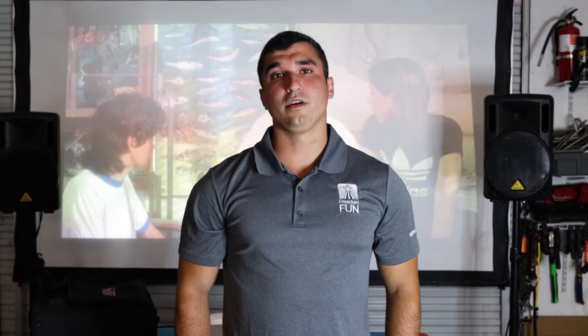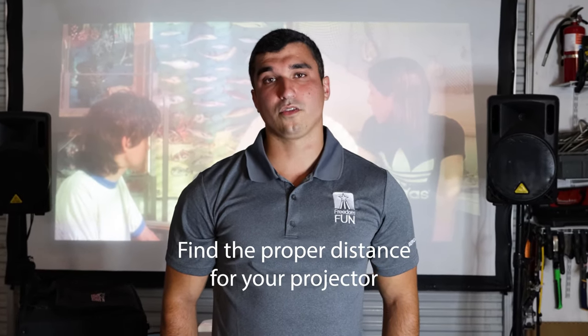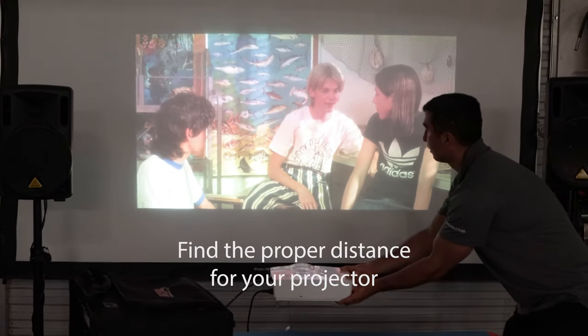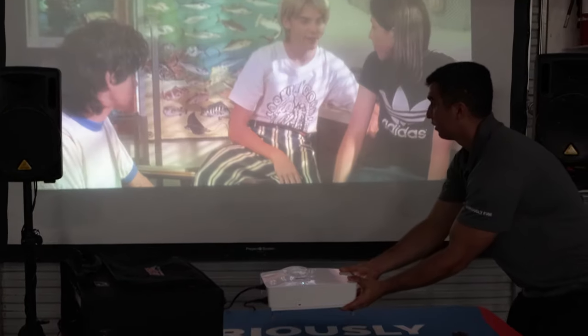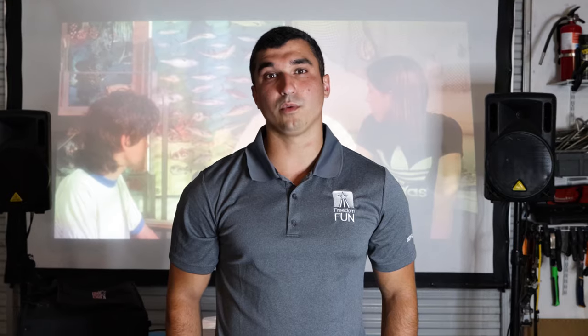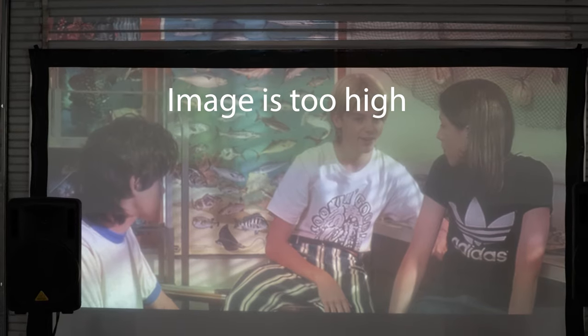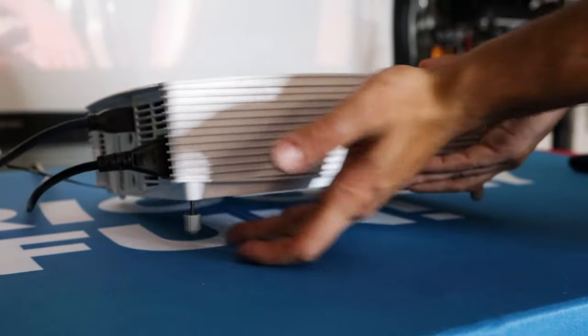The first thing we want to do is try to get the image to the right size. So if the image is too big, we want to bring the projector in, and if the image is too small, we want to scoot the projector back. If the image is too high or too low, we'll adjust the legs of the projector to center it on the screen.